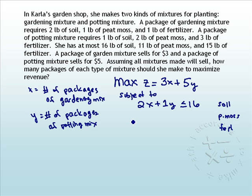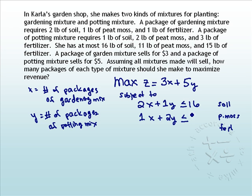Now for peat moss. A package of gardening mixture requires one pound of peat moss — we have X packages of gardening mixtures. A package of potting soil requires two pounds of peat moss. She has at most 11 pounds of peat moss, giving us the constraint X + 2Y ≤ 11.